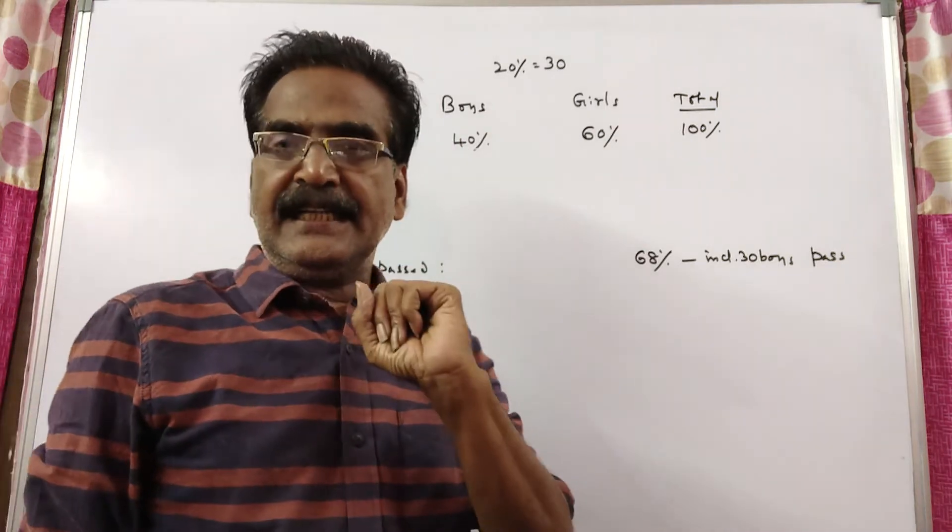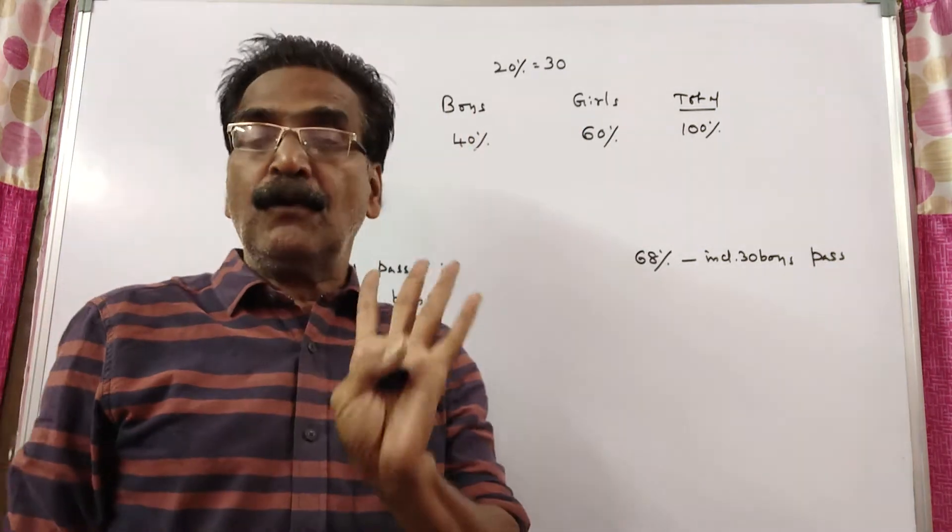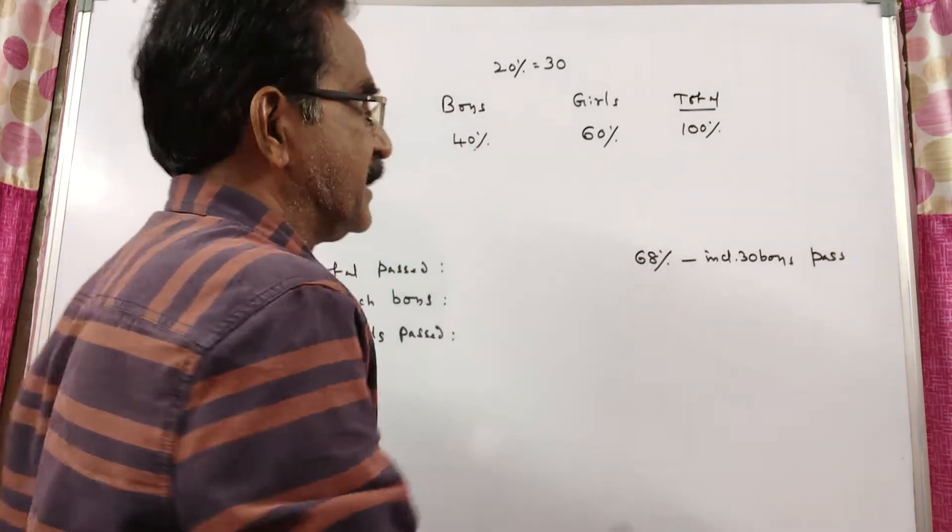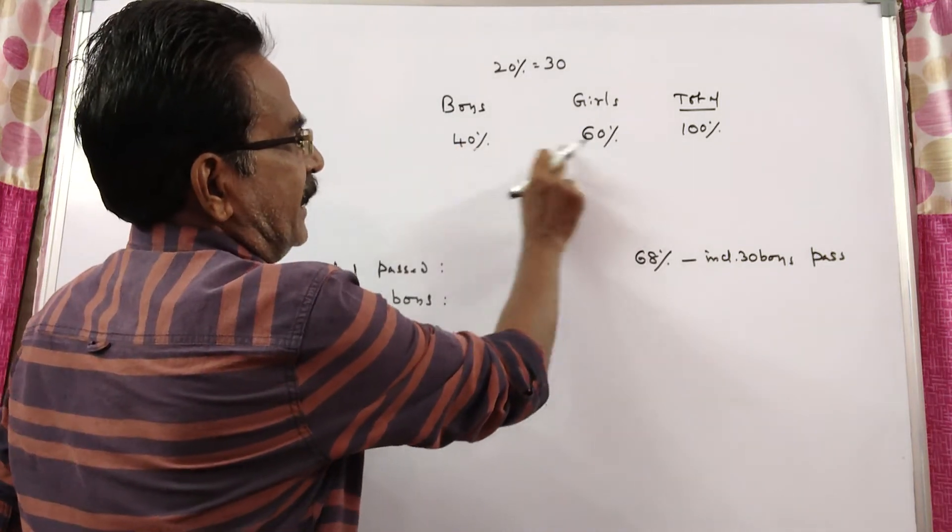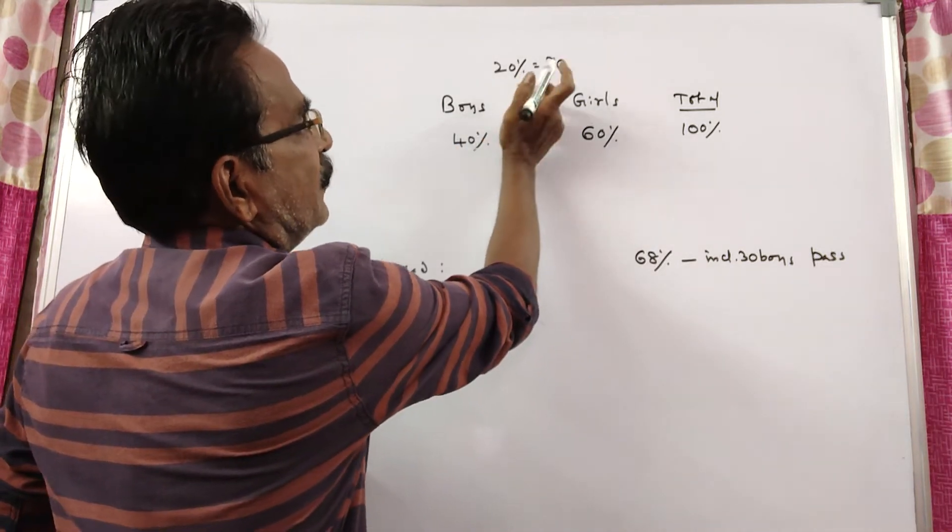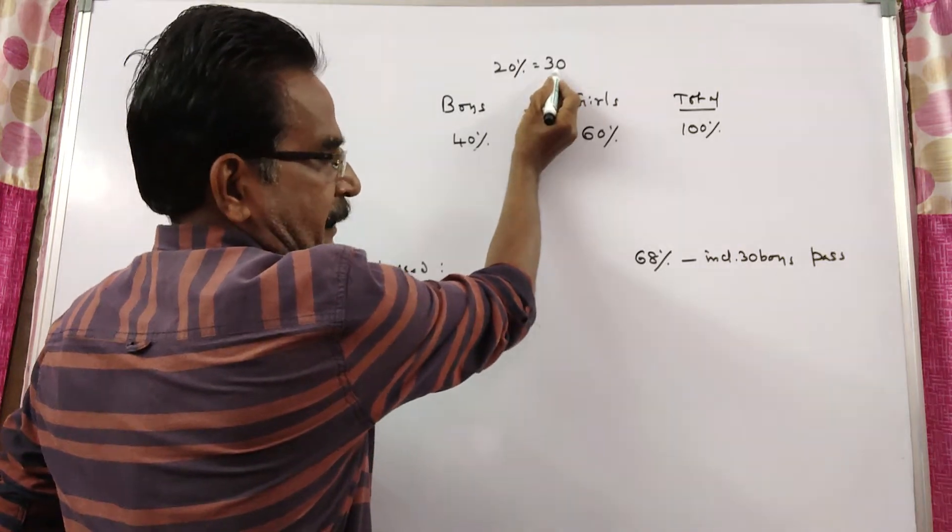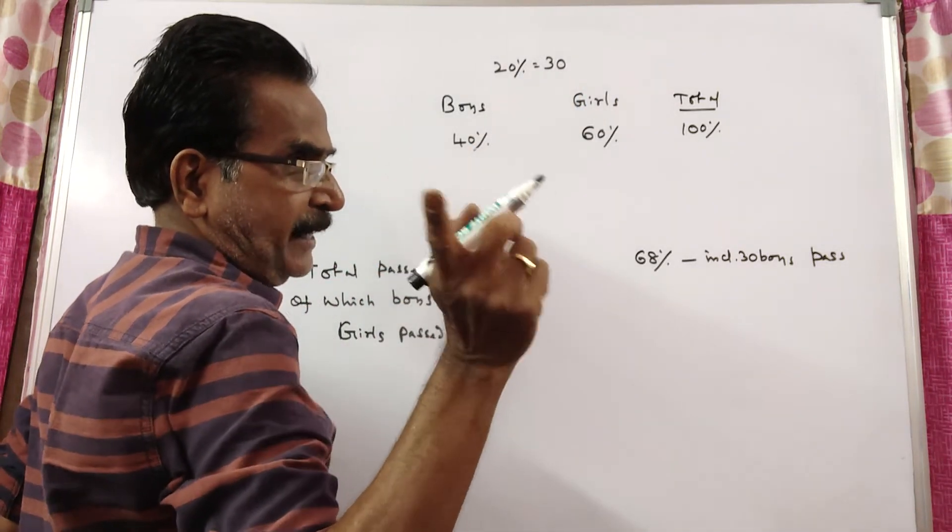It is also given that girls are 30 more than the number of boys. Here the difference between boys and girls is 20 percent. 20 percent is equal to 30 because girls are 30 more than boys.